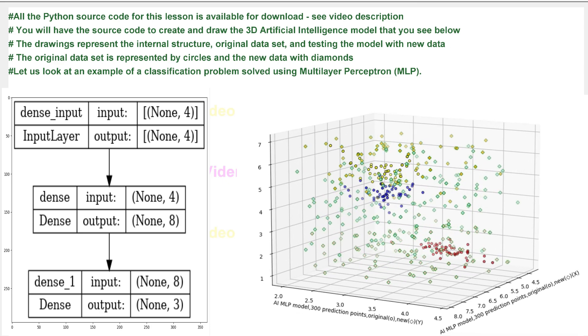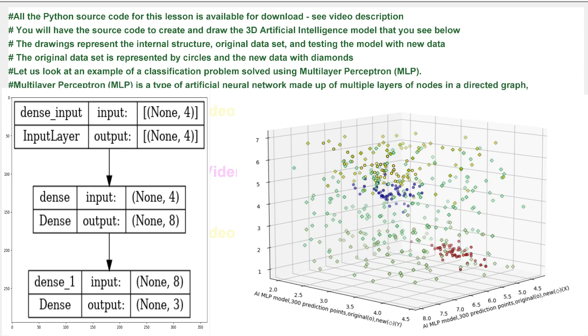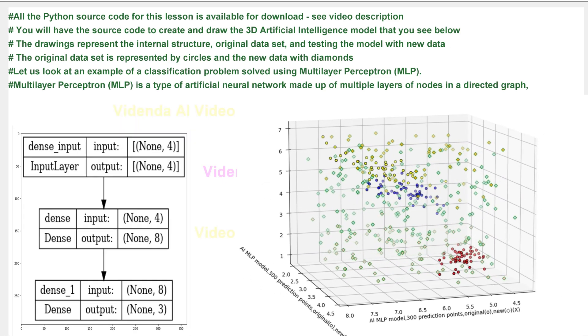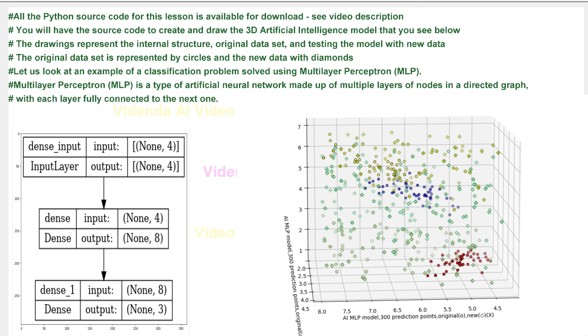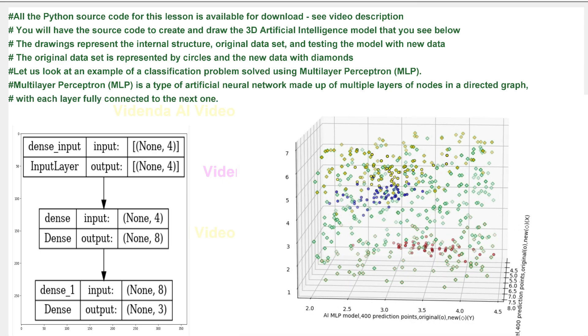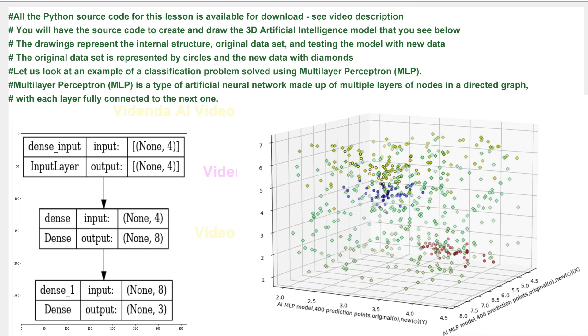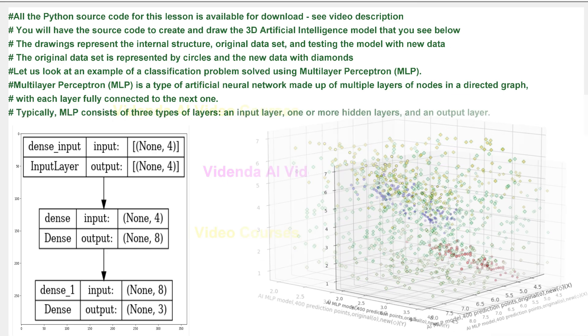Let us look at an example of a classification problem solved using Multilayer Perceptron, MLP. Multilayer Perceptron is a type of artificial neural network made up of multiple layers of nodes in a directed graph, with each layer fully connected to the next one.